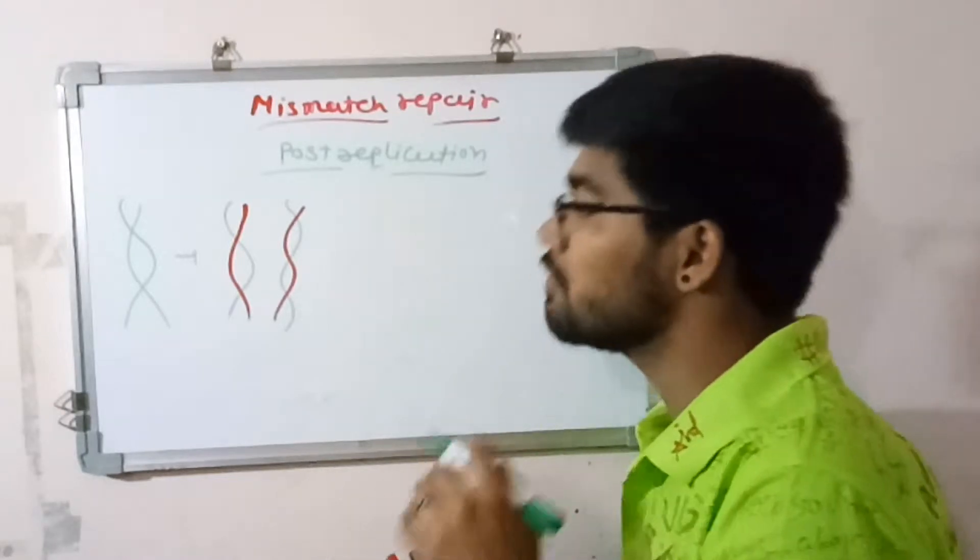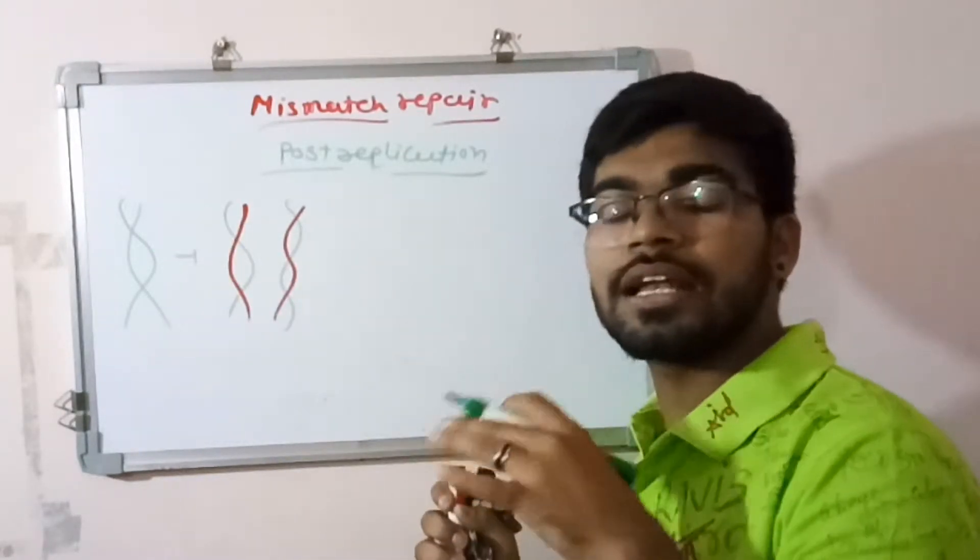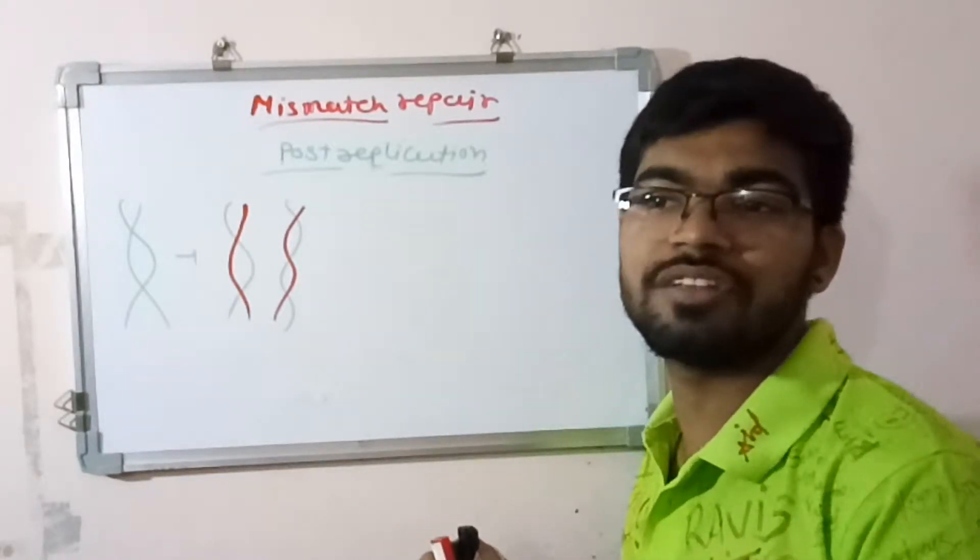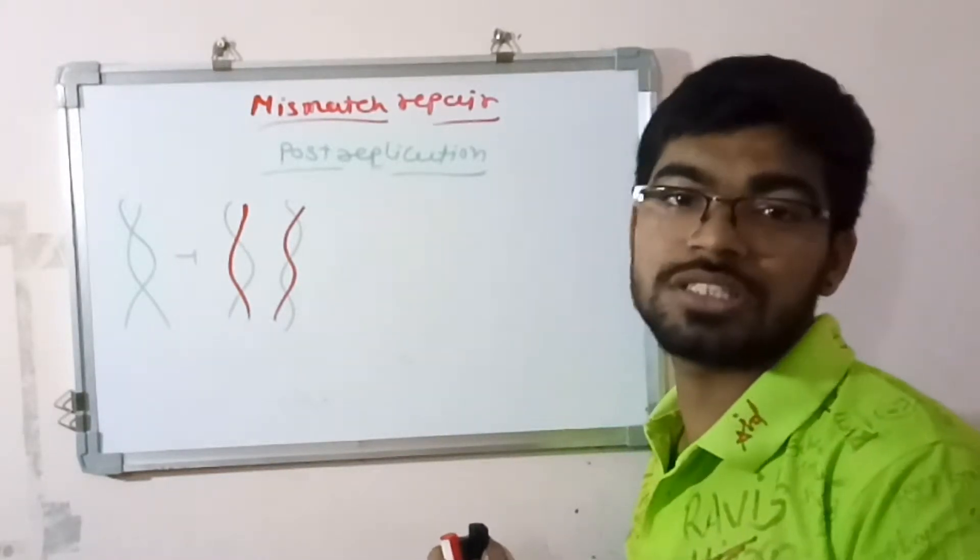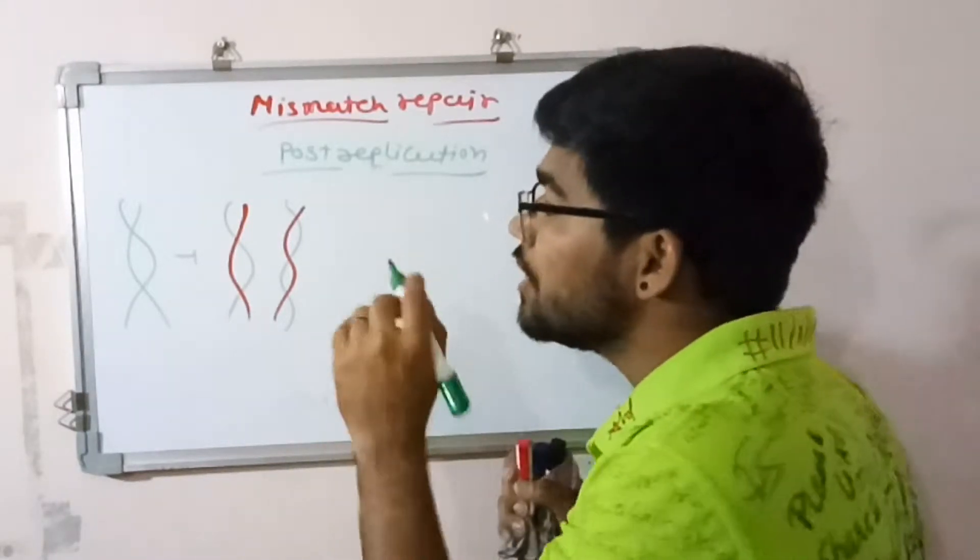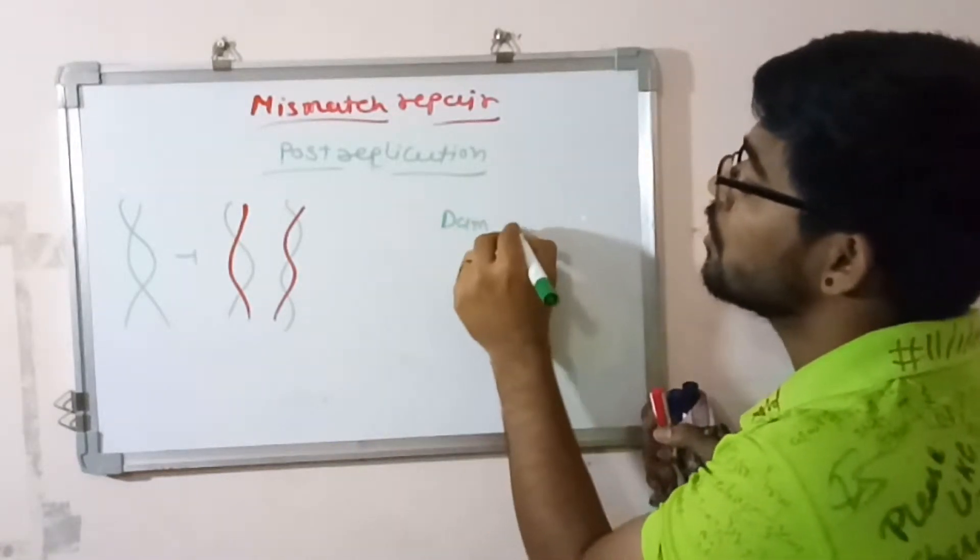The problem is on the newly synthesized strand. So if the repair replication or damage mechanism is coming, then how can they differentiate between the parental strand and the newly synthesized strand? During the replication, when this polymer is the template, here is one mechanism for dam modification.